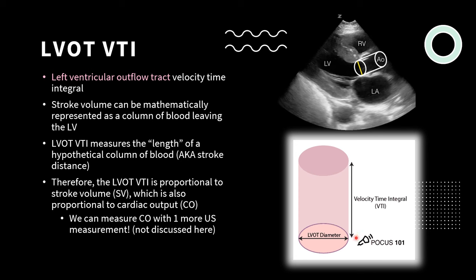We assume that the LVOT diameter stays constant during a patient's hospital course. Although we're not calculating the stroke volume itself, the LVOT VTI is proportional to the stroke volume, which is also proportional to the cardiac output. We can actually measure cardiac output with one more ultrasound measurement, but we won't discuss that today.